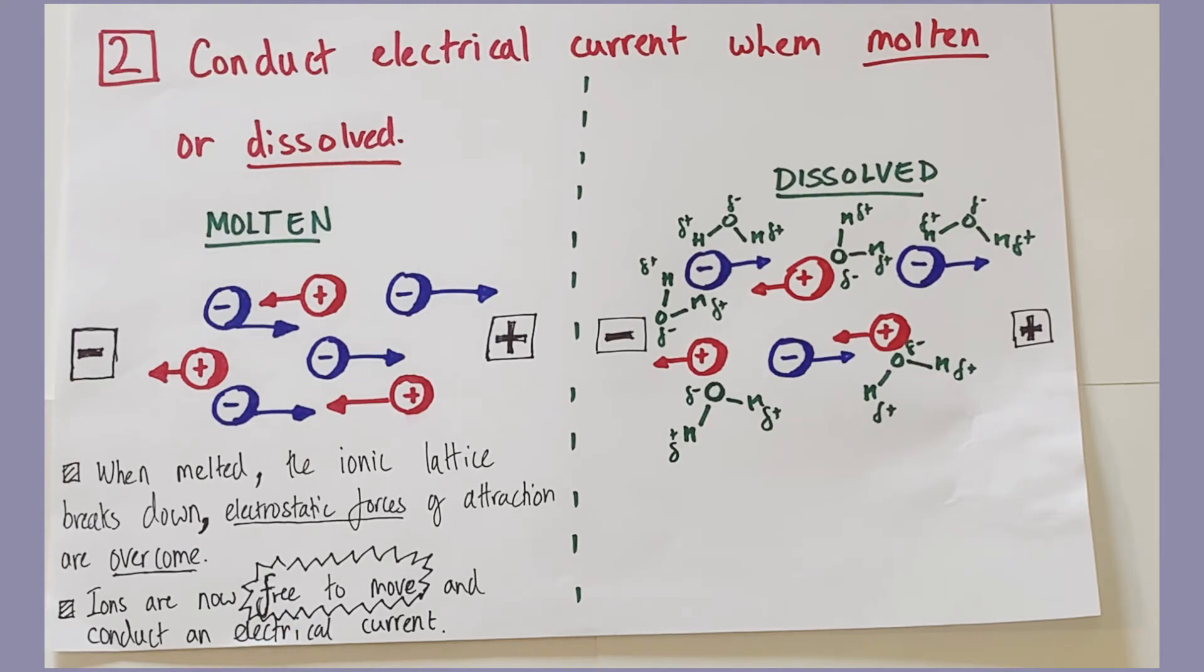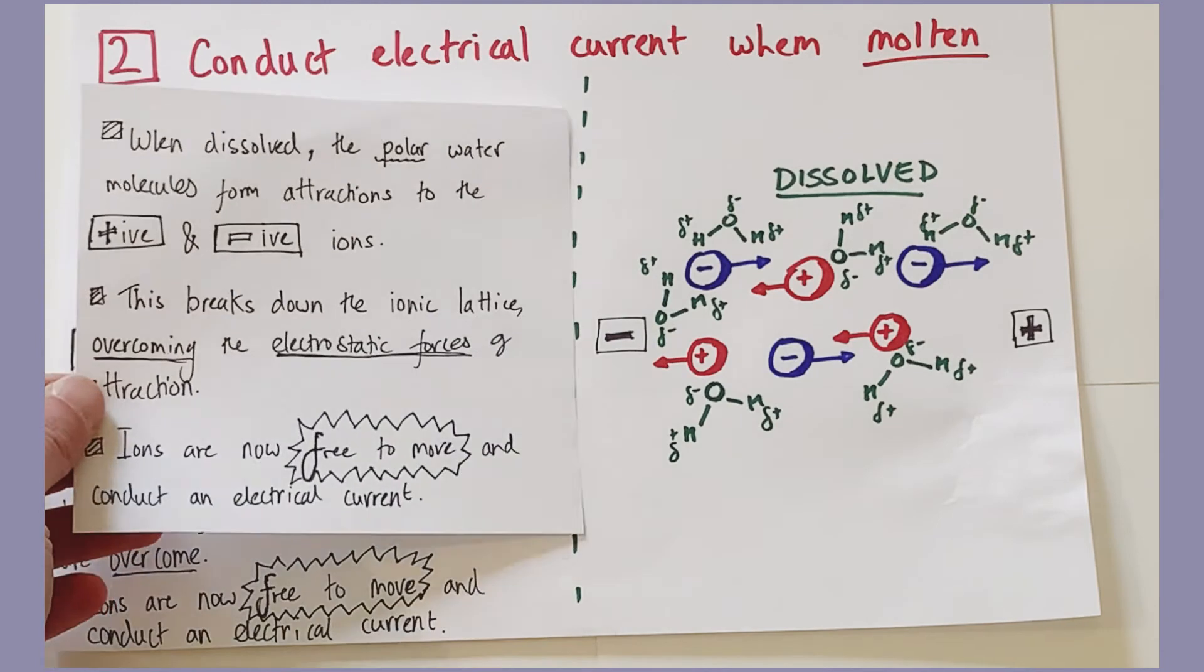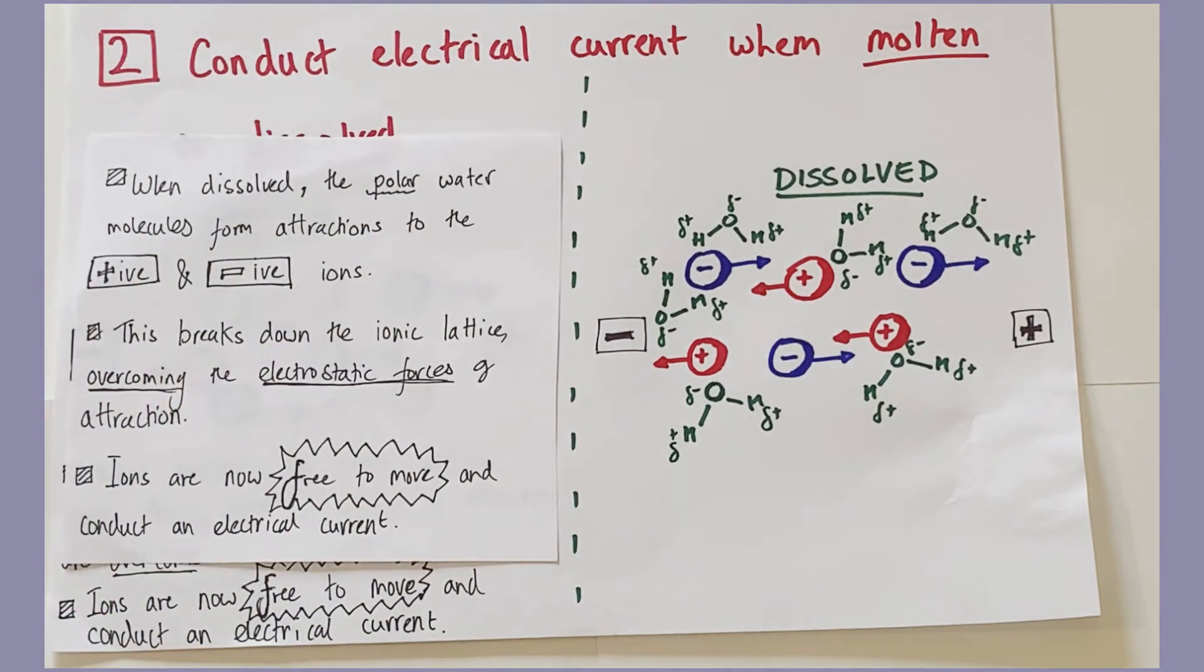Now the same is true if we dissolve giant ionic structures. Many giant ionic structures, many ionic compounds dissolve in water. And the reason for that is because water is described as a polar molecule due to the uneven distribution of electrons inside water molecules due to a factor called electronegativity difference.